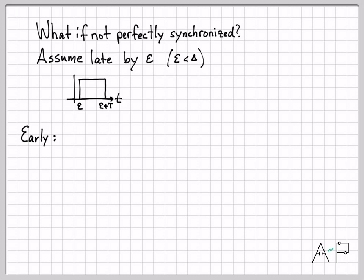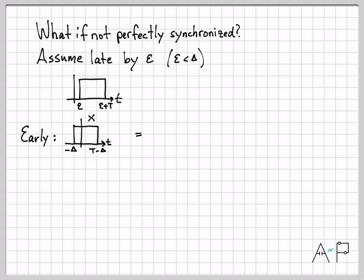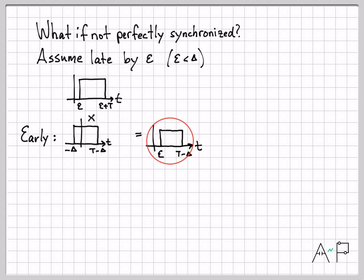On the early path, we still mix with the same early reference — purposely off by delta. Multiplying these two things together gives a rectangle that starts at epsilon and ends at whichever edge comes first: T minus delta, since T minus delta is less than T plus epsilon. Integrating that region and grabbing the final value gives an area of T minus delta minus epsilon.